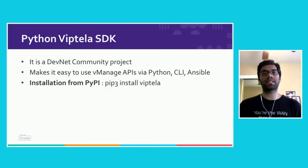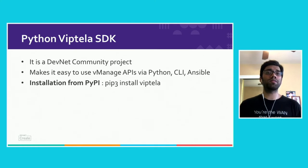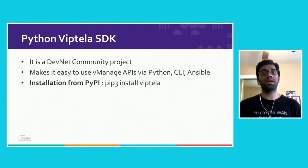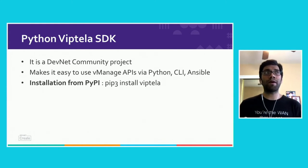The SDK is a DevNet community project actively contributed to by various Cisco sales team members, customer experience team members, and technical marketing engineers. The whole idea when we started developing this SDK was to make it really easy for someone to consume the vManage APIs — either through Python scripts, a click-based CLI interface, or as part of Ansible modules. It's on PyPI, so all you have to do is pip install and the SDK will be part of your local Python virtual environment.